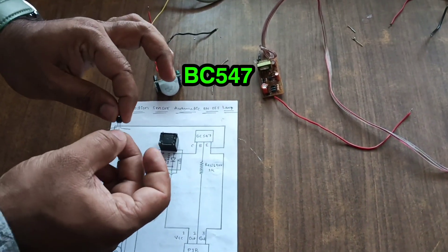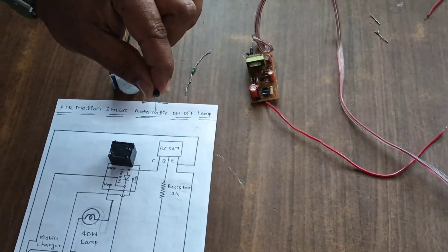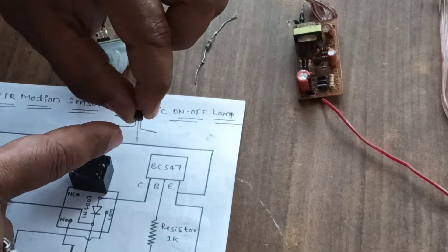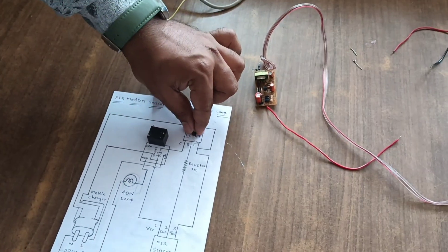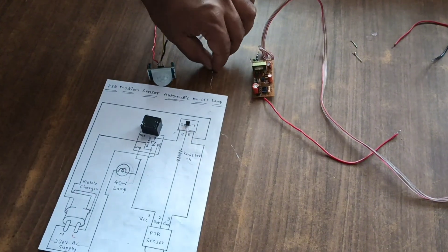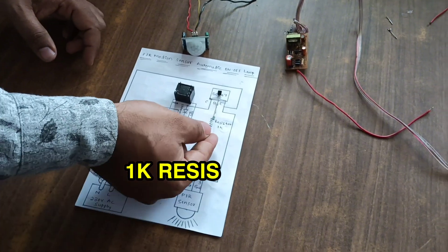This is a three-terminal transistor. First terminal is collector, second is base, third is emitter, as shown in this diagram. We used a 1k resistor.